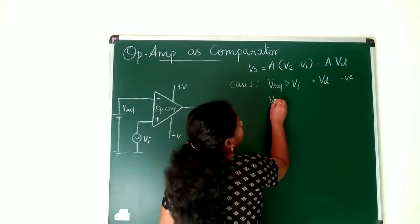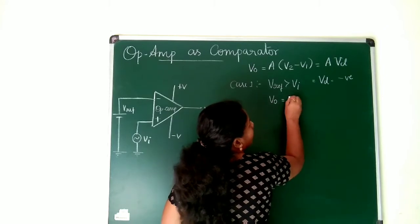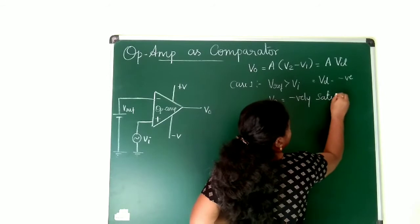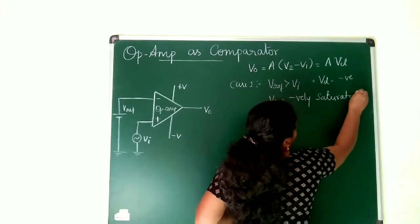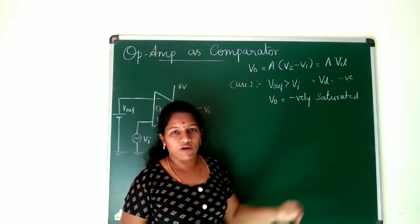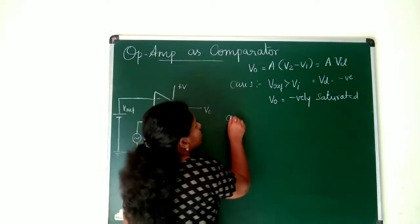So what happens to your V0? V0 will be negatively saturated value. Since the gain is very very high, you will be getting negatively saturated cycle at the output. So next, case 2.